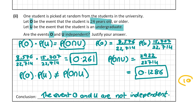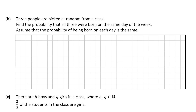Moving on to question B: three people are picked at random from a class and we're asked to find the probability that all three were born on the same day of the week, assuming equal probability for each day. The first student can be born on any of the seven days — seven over seven. The second student must match the first: one over seven. The third must also match: one over seven. So the answer is 1/49, and this is worth five marks.